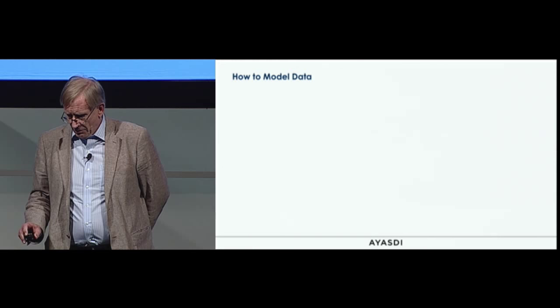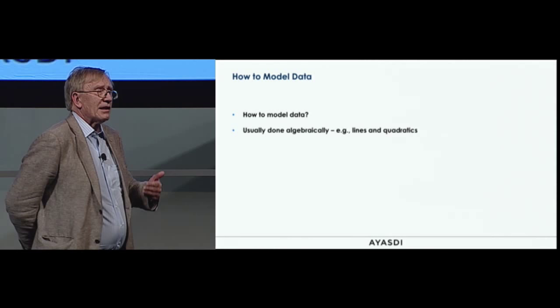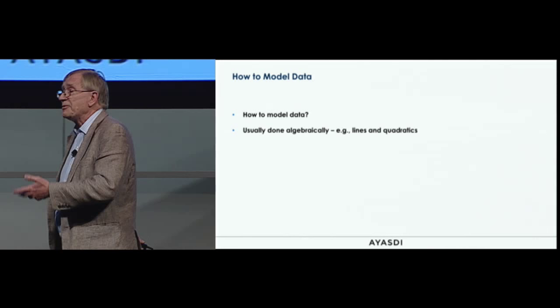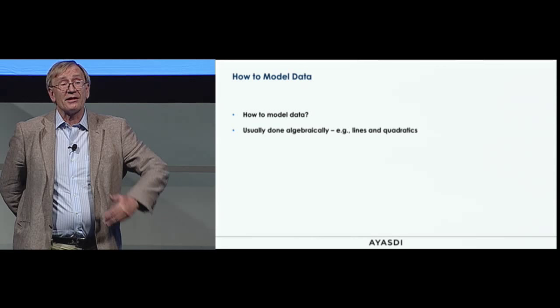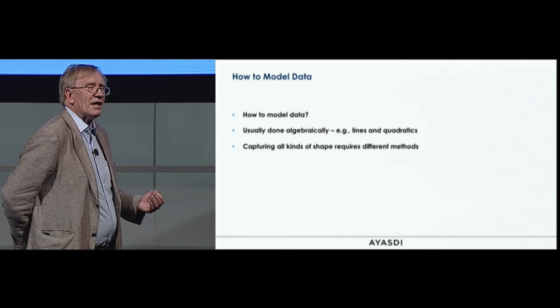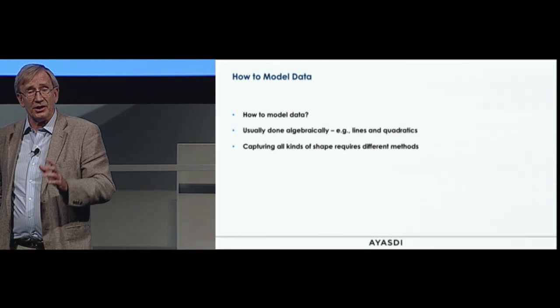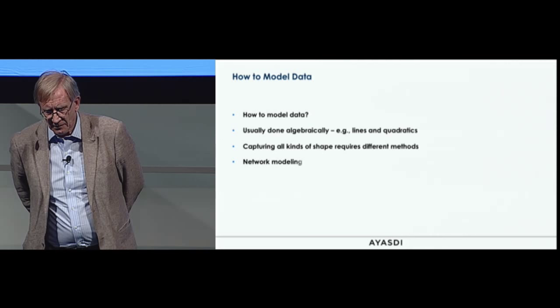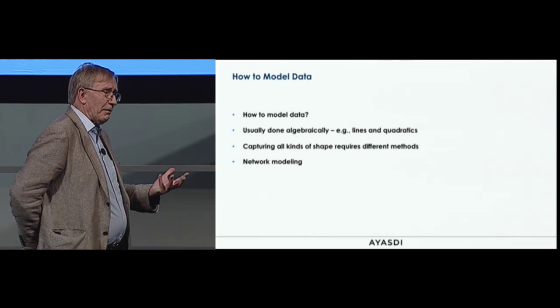The question is how to model data. Usually we model data with algebraic methods — algebraic equations, perhaps involving polynomials — basically regression or machine learning methods that use heavy algebra. But capturing all kinds of shapes requires different methods, because algebra is very powerful when it works but also somewhat limited and rigid — it can't typically capture a lot of singular behavior. So we've called this method topological data analysis.